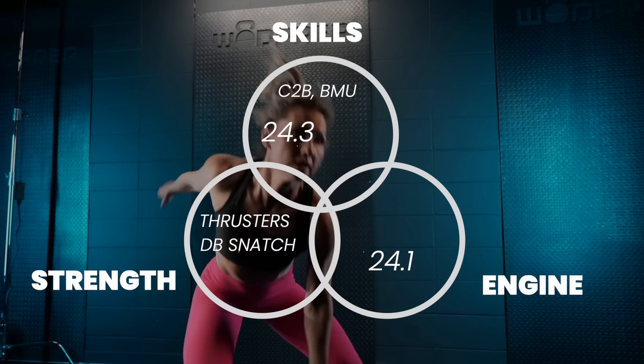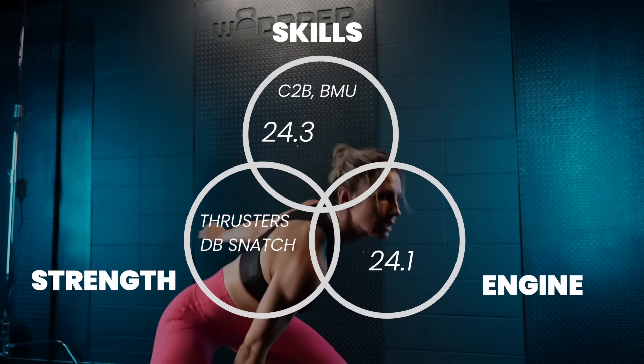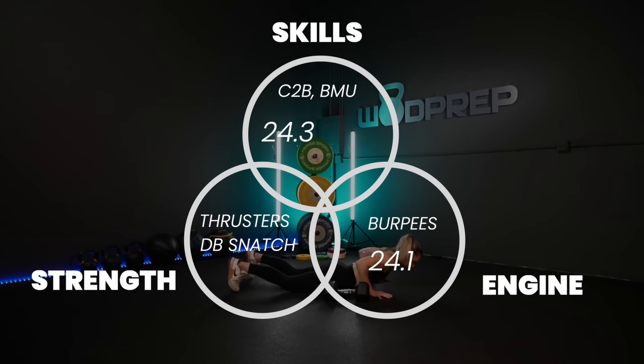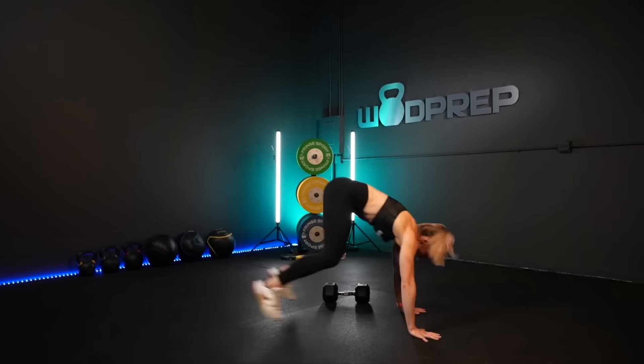24.1 was very much an engine workout. We had, yes, we had dumbbell snatches, which technically would be strength, but they weren't heavy enough to truly be a strength workout. It was all about those burpees. So I'll write burpees here.